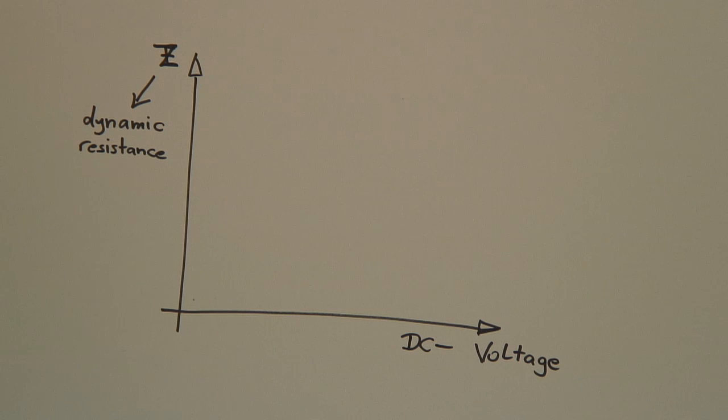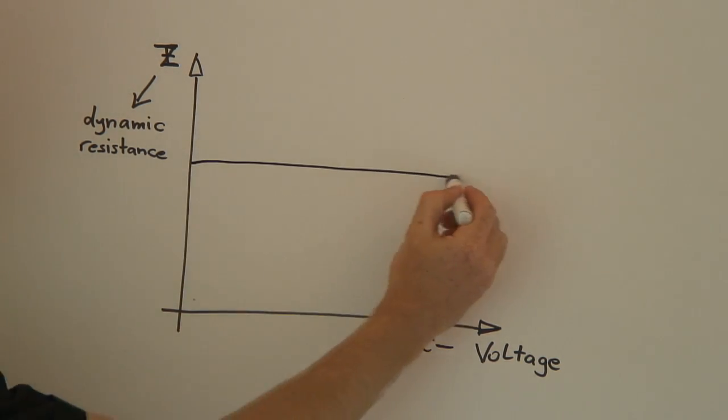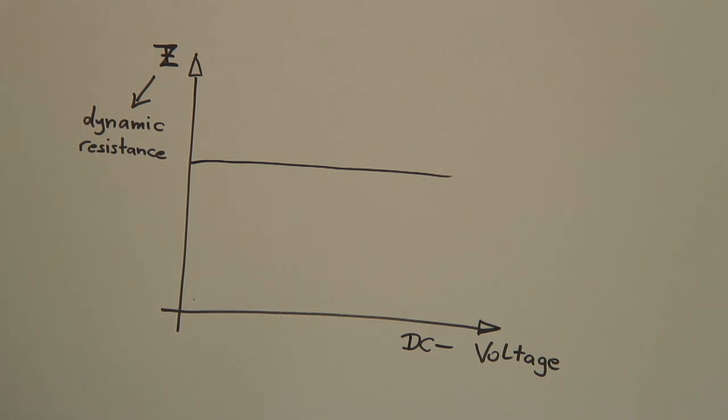A resistor, for example, does not depend on the DC voltage that is applied to the resistor. It shows constant dynamic resistance. A capacitor can show different behavior. That means the impedance or dynamic resistance can strongly depend on the operating voltage.